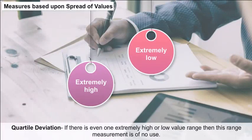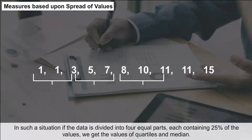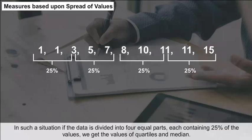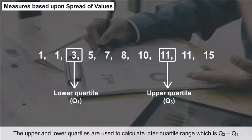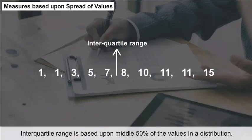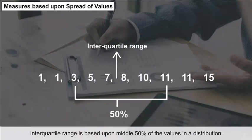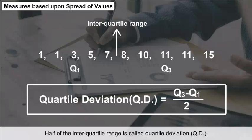Quartile Deviation: If there is even one extremely high or low value, the range measurement is of no use. In such a situation, if the data is divided into four equal parts, each containing 25% of the values, we get the values of quartiles and median. The upper and lower quartiles are used to calculate the interquartile range, which is Q3 minus Q1.